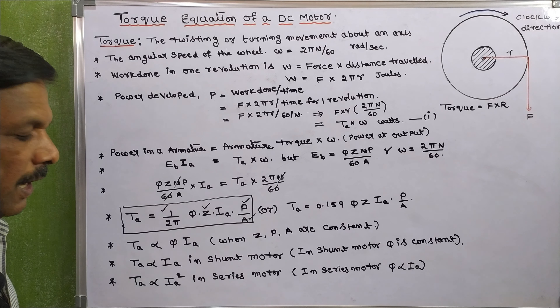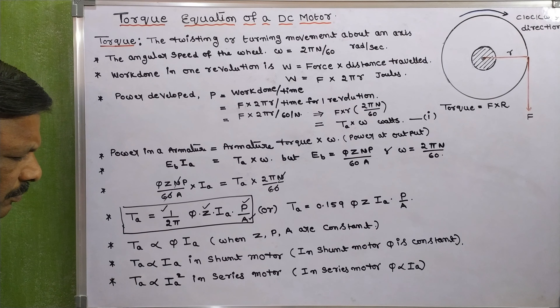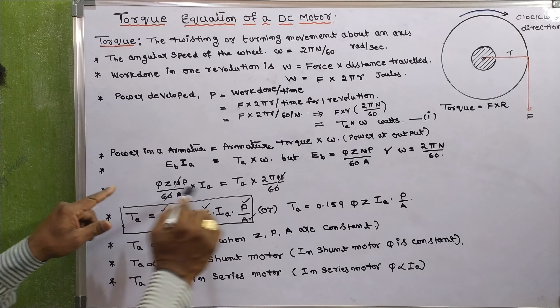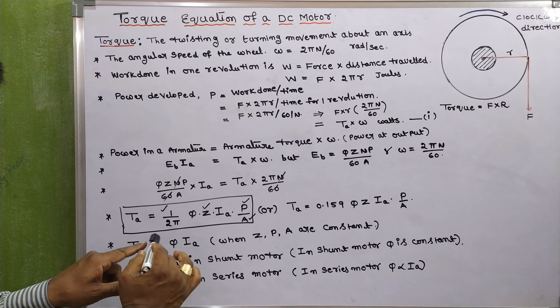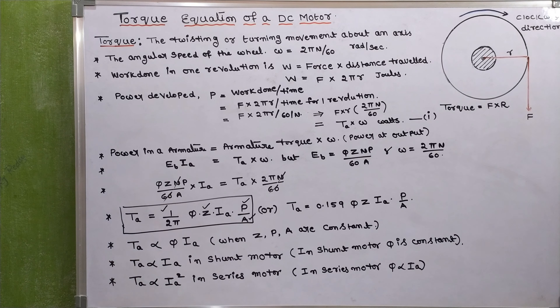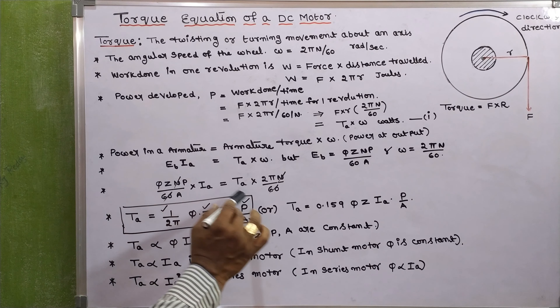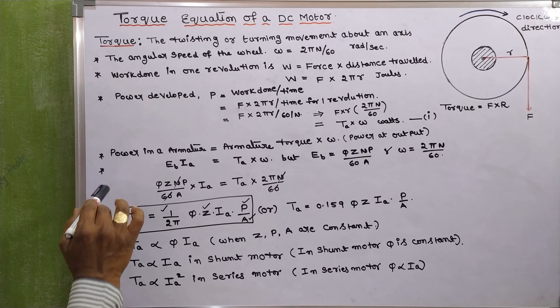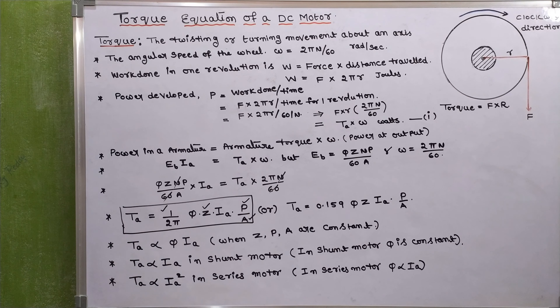So for a shunt motor, torque is proportional to I_A, and for a series motor, torque is proportional to I_A squared. This completes the derivation and equation for torque of a DC motor.